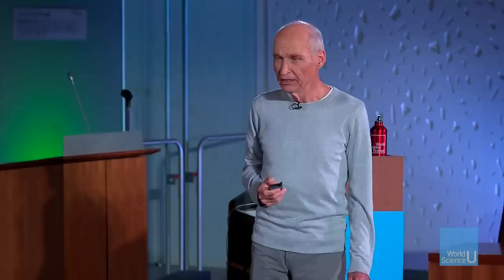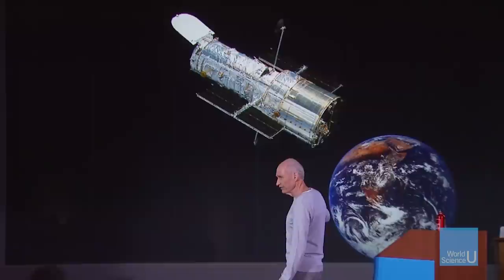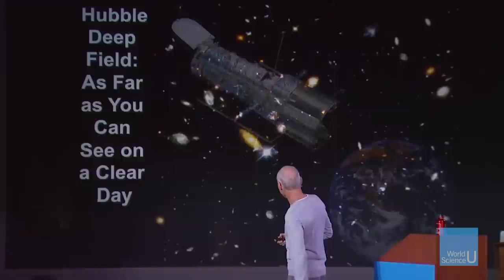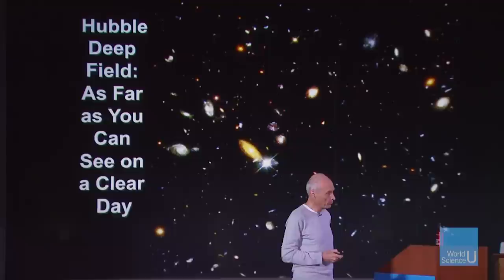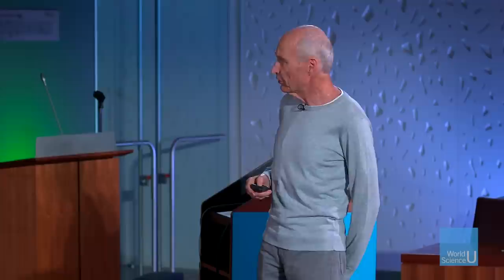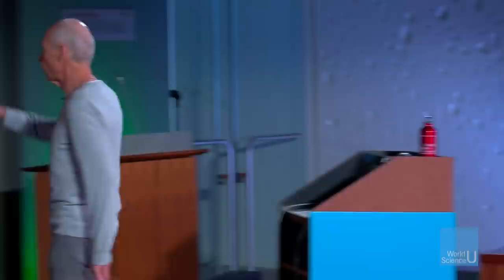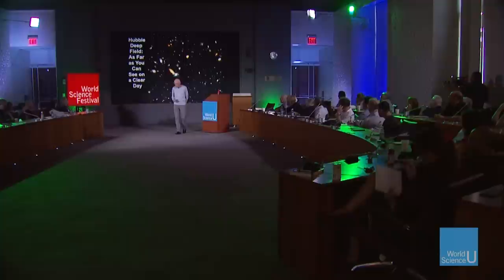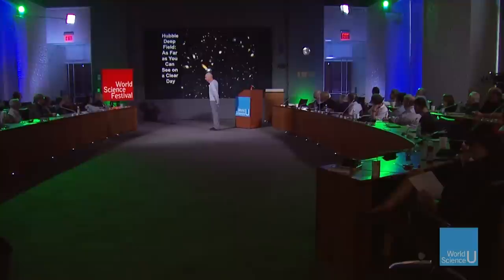When we look at the universe, we only see things that light up. That's the Hubble Space Telescope, and this is the Hubble Deep Field — a tiny bit of the sky, one ten-millionth of the sky, with a thousand galaxies. There's only one star in the picture. But that's the four percent. Not all of the four percent even lights up, so you're only seeing a bit of the universe.